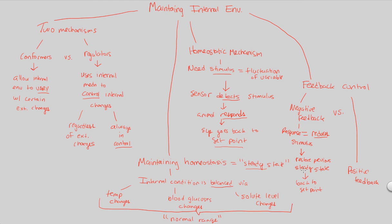A classic example of negative feedback is sweating. When you work out, your body temperature rises fast and high. The body responds with sweat. Sweat is mainly water, which has a very high heat of vaporization — it can absorb a lot of heat. As sweat evaporates, it reduces the stimulus of increased body temperature, getting back to a normal set point.